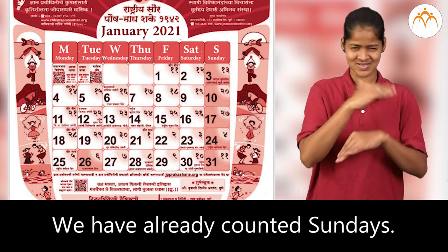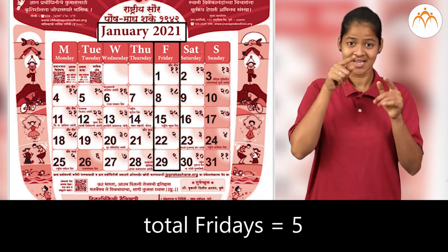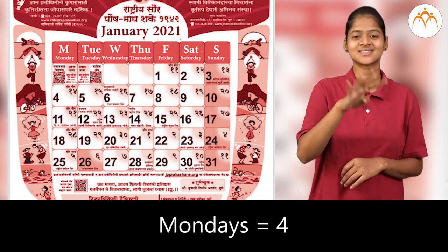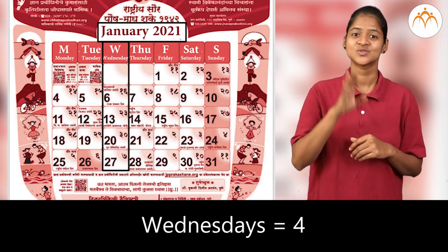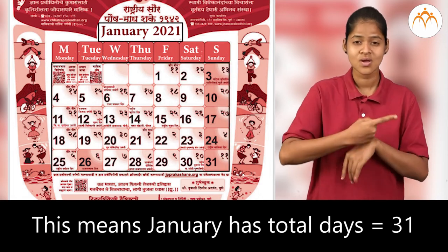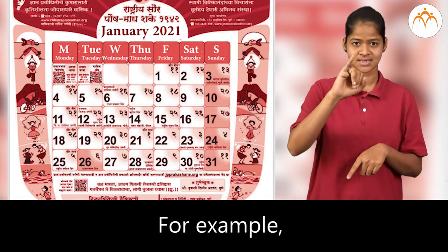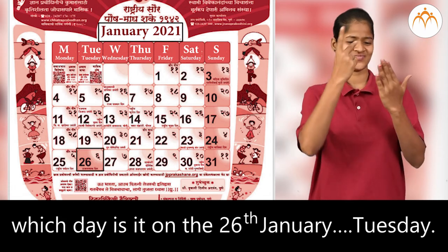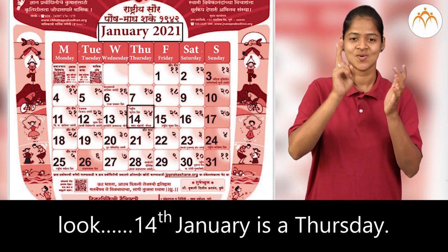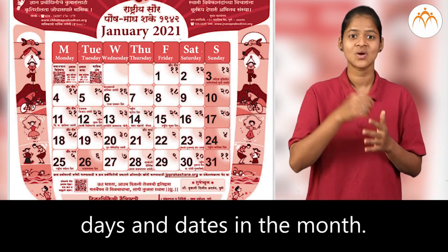In the month of January 2021: total Fridays equal 5, total Saturdays equal 5, and total Sundays equal 5. Mondays equal 4, Tuesdays equal 4, Wednesdays 4, and Thursdays 4. This means January has 31 days total. We will see which date falls on which day. For example, which day is it on the 26th of January? Tuesday. When is the festival of Makar Sankranti? 14th of January is a Thursday. This way you can find information about days and dates in the month.